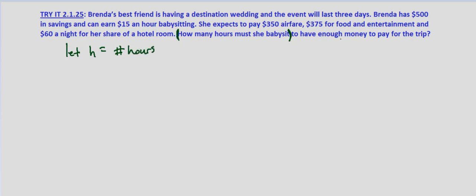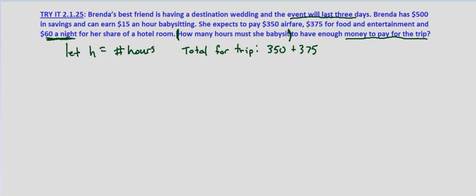Because we're just looking at having enough money to pay for the trip, let's first look at what's the total amount she needs. She'll pay $350 for airfare plus $375 for food and entertainment, and it's $60 a night. Here's a key part of the problem that might be overlooked — the event will last three days. So we'll assume she needs $60 for three nights, which is 60 times 3.